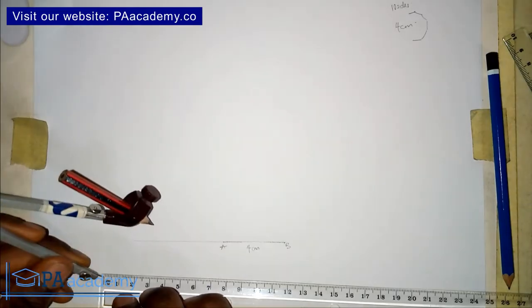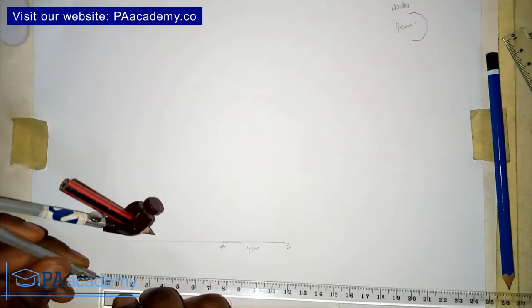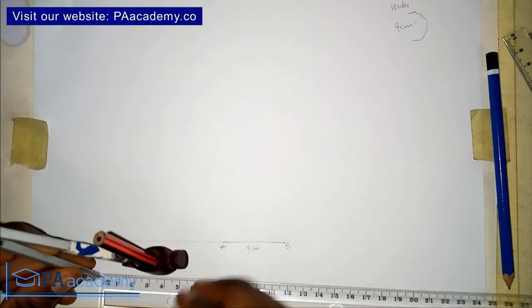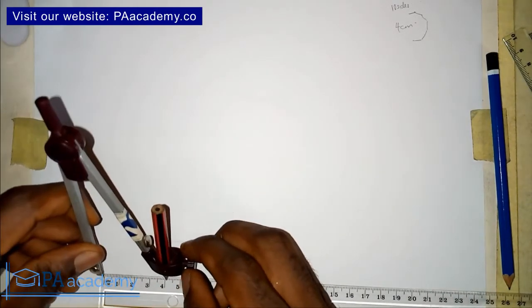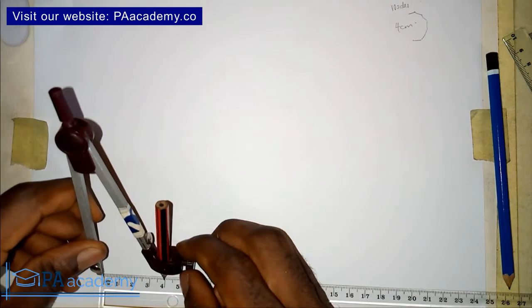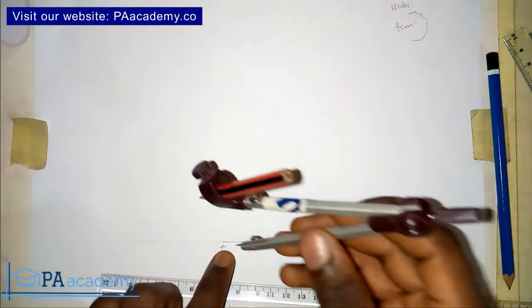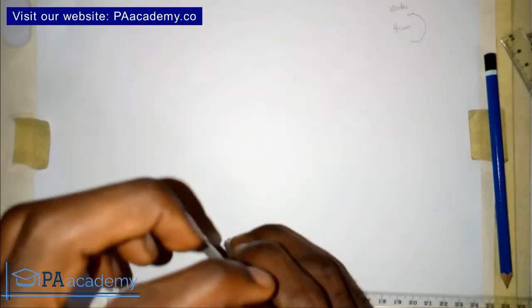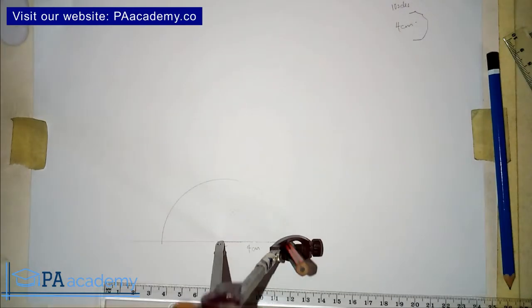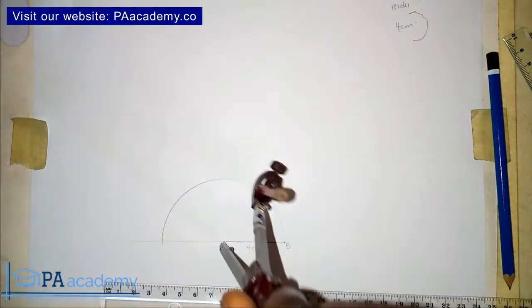Next, measure 4 cm on your compass. Place the compass on point A and draw a semicircle.